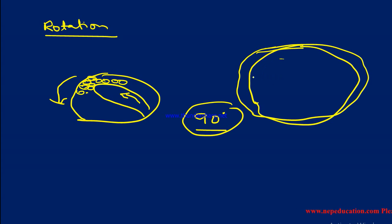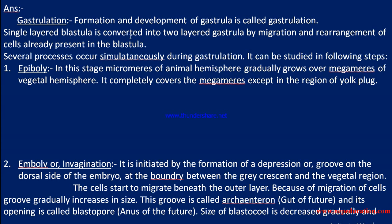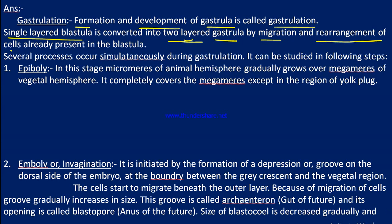Now, for the written answer language: gastrulation is the formation and development of the gastrula. In this process, the single-layered blastula is converted into a two-layered gastrula. The third layer, mesoderm, is derived from ectoderm and endoderm by migration and rearrangement of cells already present in the blastula. In comparison to the blastula, the rate of cell division becomes less in the gastrula.